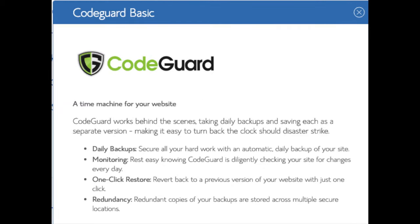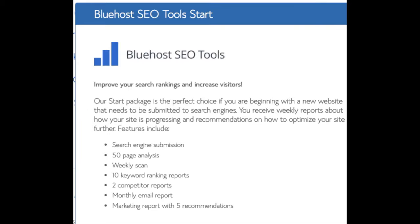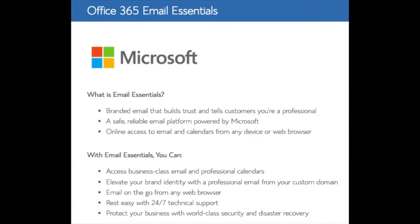You'll see CodeGuard, which creates daily backups and allows you to restore your site with a click of a button — there are free alternatives that work just the same. SEO Tools Start you can keep unselected; this addon submits your site to search engines and provides a report on rankings, but you can do that for free. Office 365 Email Essentials is Microsoft Outlook email — keep it if you want, but it isn't necessary. All of these addons are completely optional and up to you.